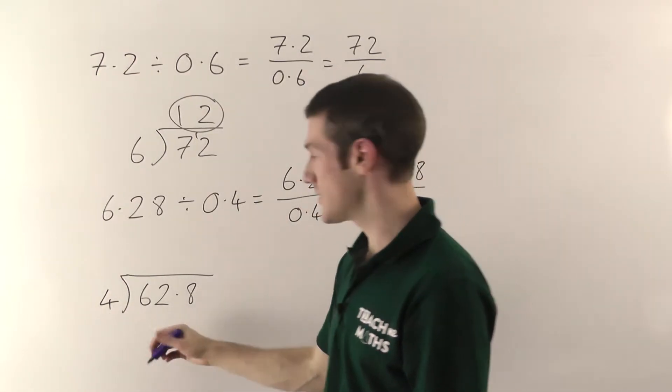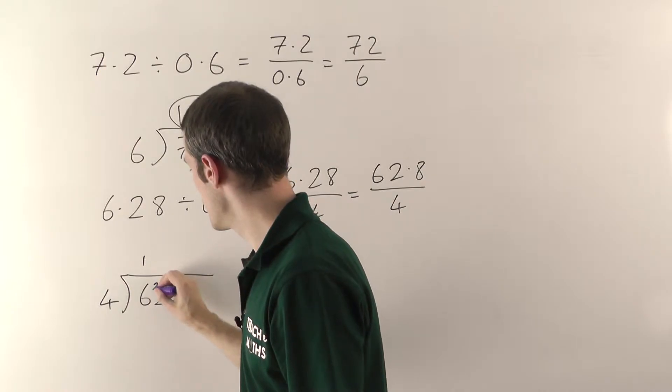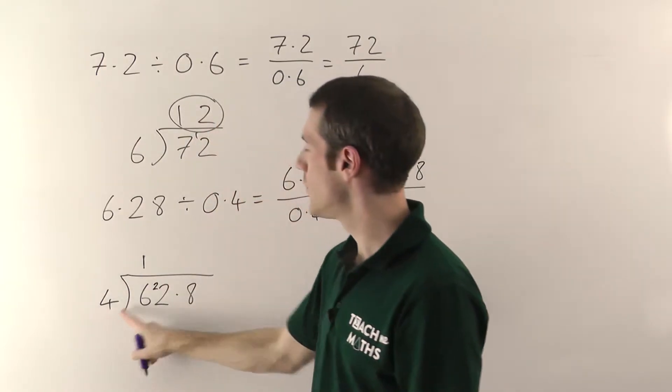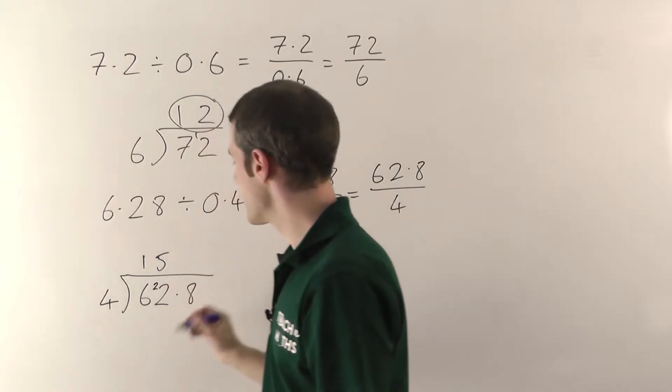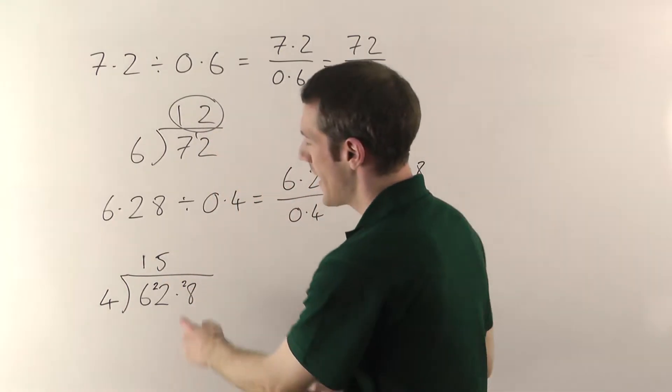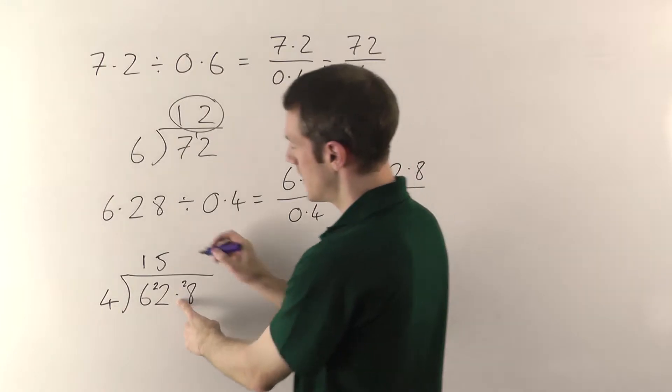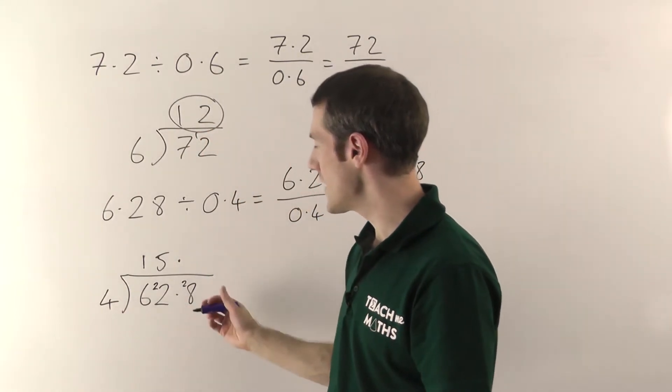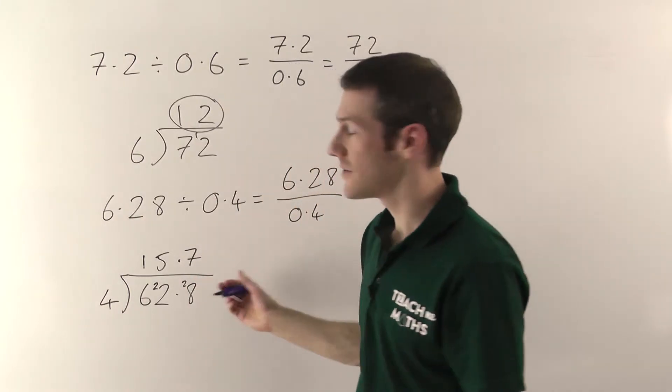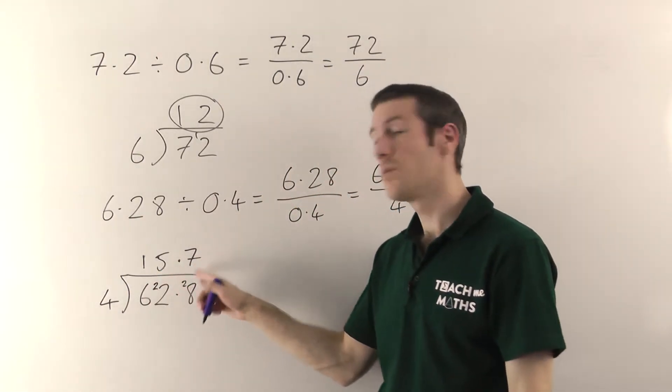So 4s into 6 go once, remainder 2. 4s into 22, well, that's going to go five times. The remainder is going to be 2. That pops onto here. And where the decimal point is in the question, you're going to have one directly above in the answer. 4s into 28 go seven times. So the final answer here is 15.7.